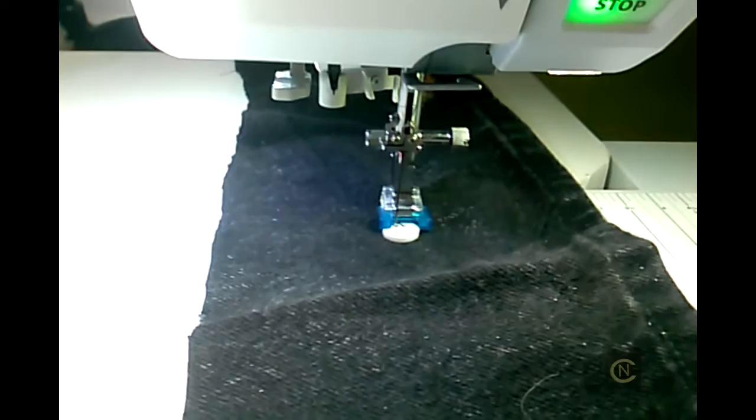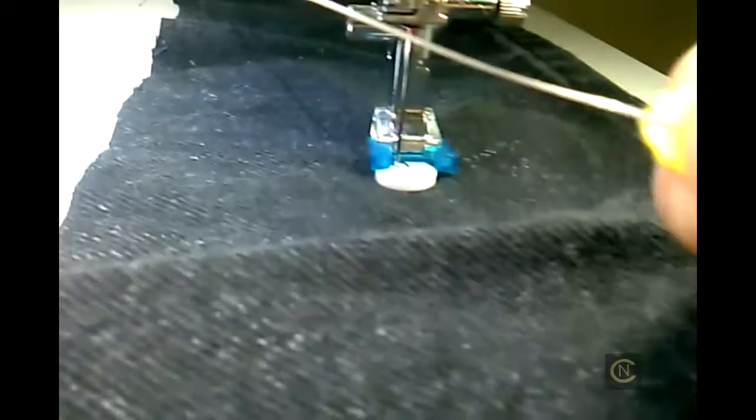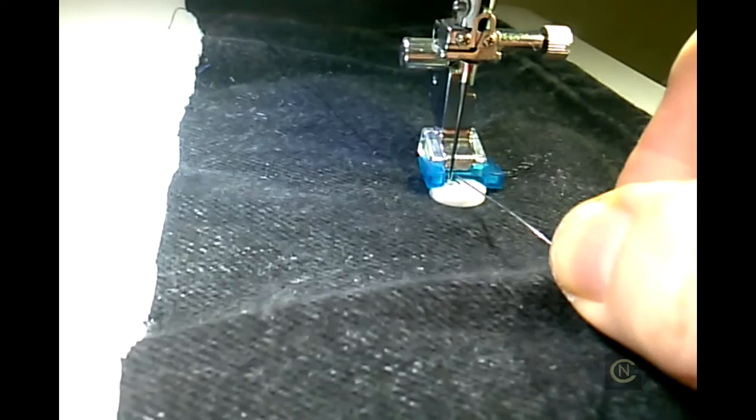First, you're going to lower your feed dogs, then put your button foot on. Take a pin and place it right in the middle of the two holes of your button.